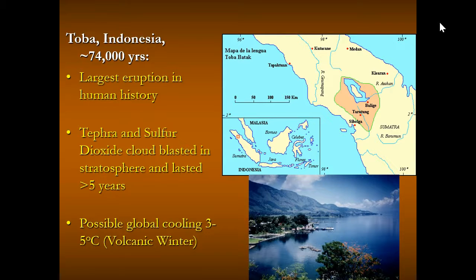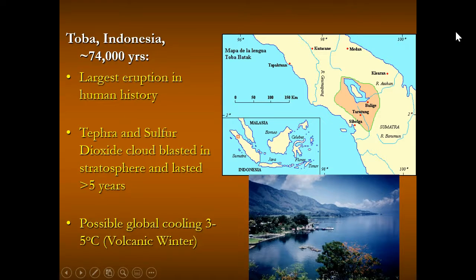Mount Toba in Indonesia erupted 74,000 years ago in a major ultra-Plinian eruption. The amount of tephra and sulfur dioxide in the atmosphere must have been enormous, causing a possible global cooling event of three to five degrees C for several years — what scientists call a volcanic winter, where ash and gas blocked sunlight causing really extreme cold temperatures. Archaeologists also report that the human population went through a bottleneck during this time, likely linked to this eruption.